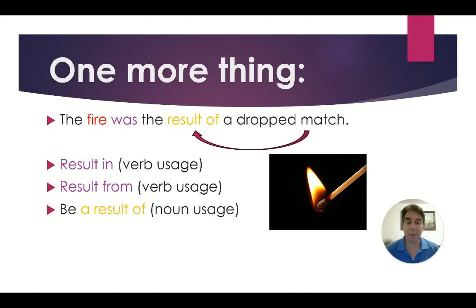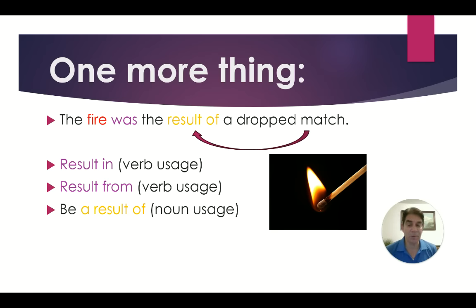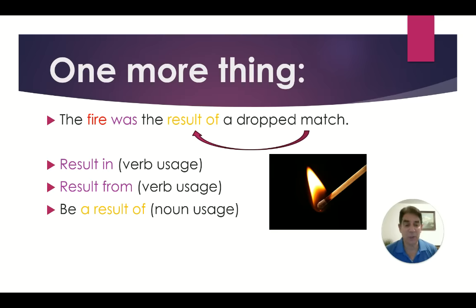One more thing with 'result.' Look at this sentence: The fire was the result of a dropped match. In this case, the word 'result' is not a verb but a noun, so we use the phrase 'be the result of.' Remember: with 'result in' and 'result from,' result is a verb — verb usage. With 'be a result of,' the word result is a noun — noun usage.